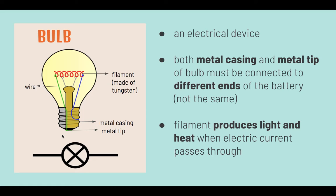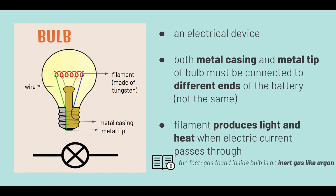Both the metal casing and metal tip of the bulb must be connected to different ends of the battery. The filament will produce light and heat when electric current passes through it. A fun fact is that the gas found inside the bulb has to be an inert gas like argon.